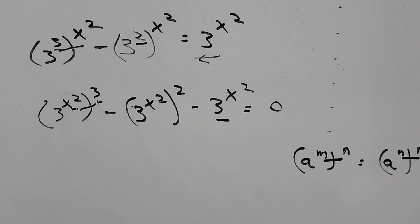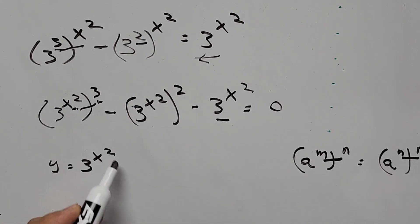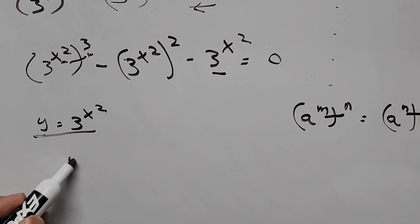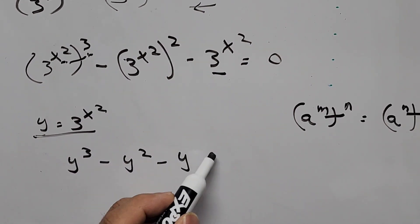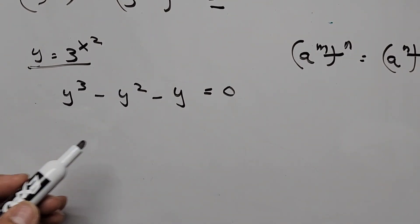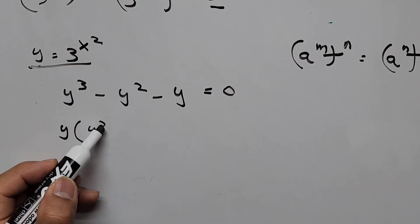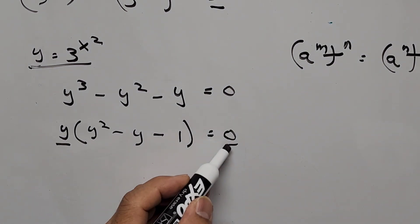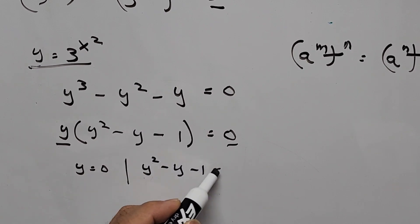Since the bases are all the same, I'm introducing a substitution variable y to represent 3 to the power of x squared. So let y equal 3 to the power of x squared. The equation now becomes y cubed minus y squared minus y equals 0. From here, we can factor out y since all terms contain y. So we have y times the quantity y squared minus y minus 1 equals 0.